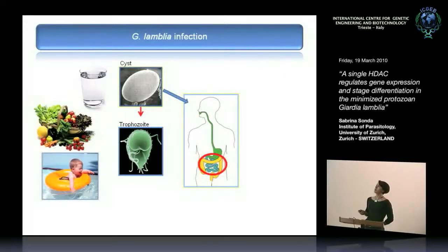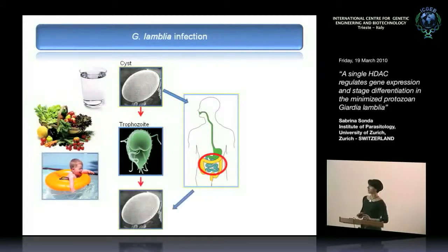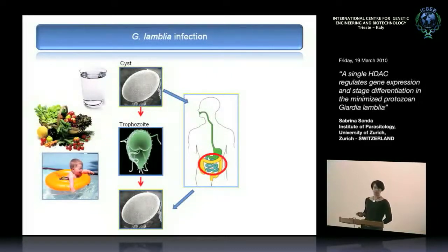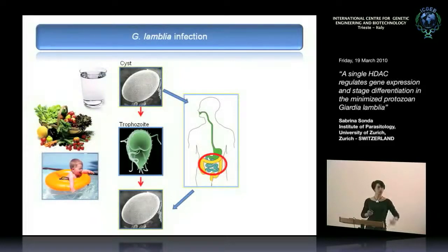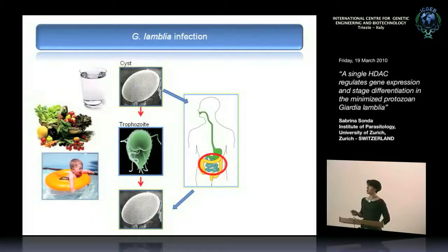The trophozoite is the vegetative form — it is flagellated with eight flagella, highly mobile, and can colonize the intestine, creating damage. When the intestinal environment is no longer favorable for the parasite, another stage conversion occurs and the trophozoites revert to cysts, which are excreted with the feces, contributing to the spread of infection. This life cycle is very simple — only two stages — compared with more sophisticated parasites like Plasmodium or Toxoplasma.